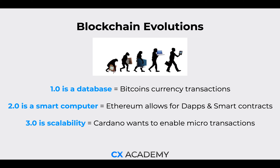So, the evolutions of blockchain technology. As we know, Bitcoin was the first implementation of blockchain. Blockchain was designed to facilitate Bitcoin — it wasn't necessarily founded for the sole purpose of that, but it has been designed for the best use case of Bitcoin. Blockchain 1.0 is simply a database. It allows a currency to store its transactions in the ledger, which is the blocks of information on the blockchain.